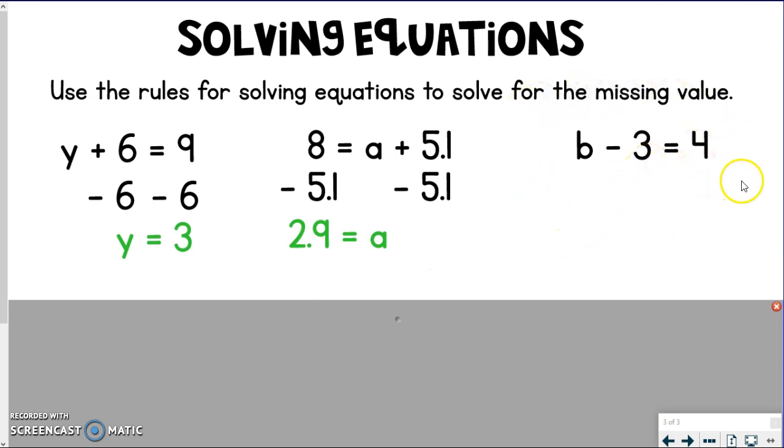Now when I look at this next one, we have b minus 3 equals 4. I have subtraction happening. I'm taking 3 away from b. So in order to get b by itself, I'm going to have to add 3 to it. Because negative 3, if I add 3 to it, now I'm at 0. But again, I have to do it to both sides. So I'm going to add 3 here.